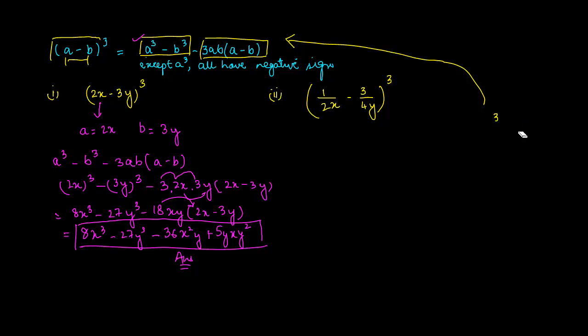Getting on with the second problem that we have, we have something in fractions. But the funda is the same. The value of a here is 1 upon 2x and the value of b is 3 upon 4y. The only difference between this and this is that the value out here is in fractions.